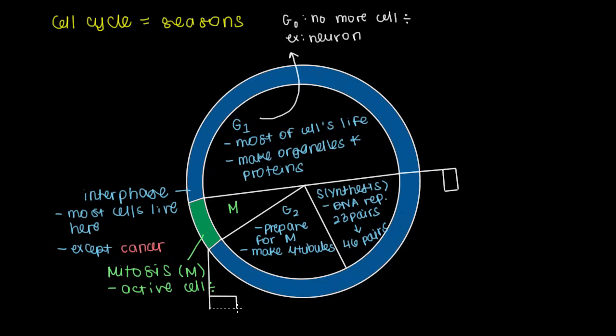In fact, there are two key places that we have extensive regulation of the cell cycle. The first checkpoint is right here between the G1 and the S phase.